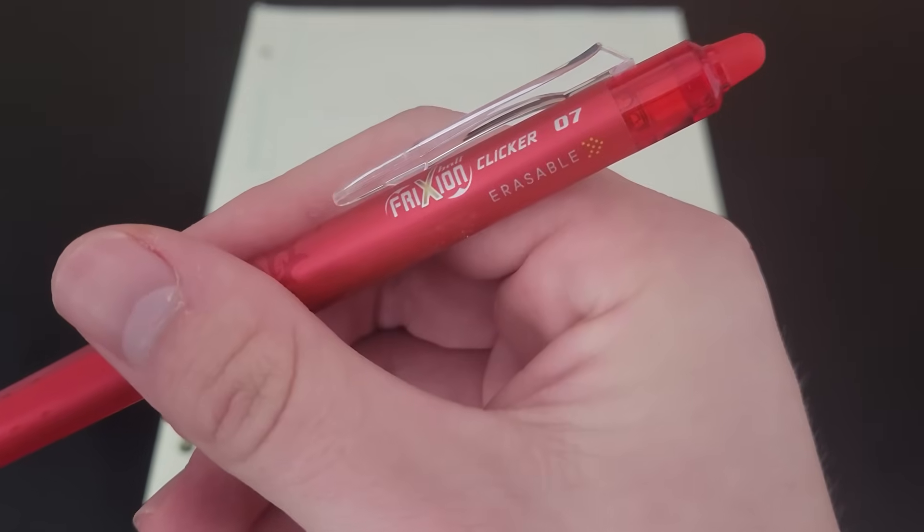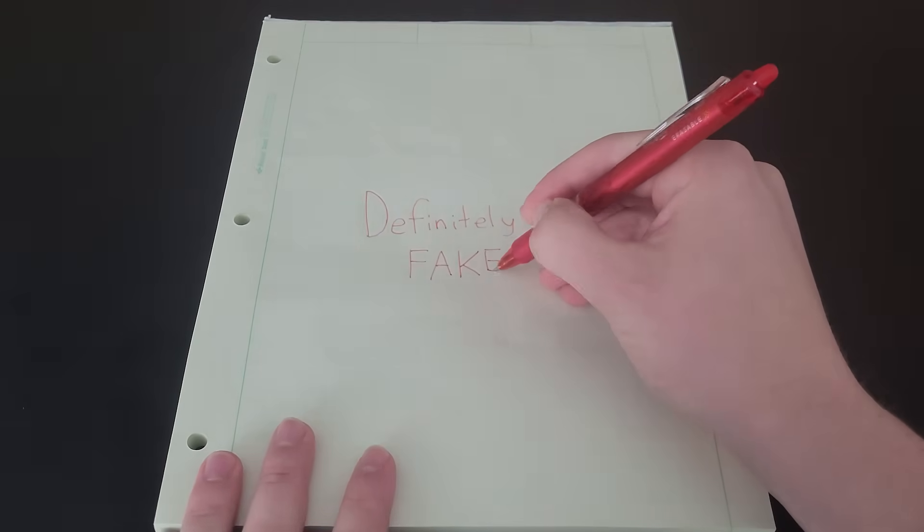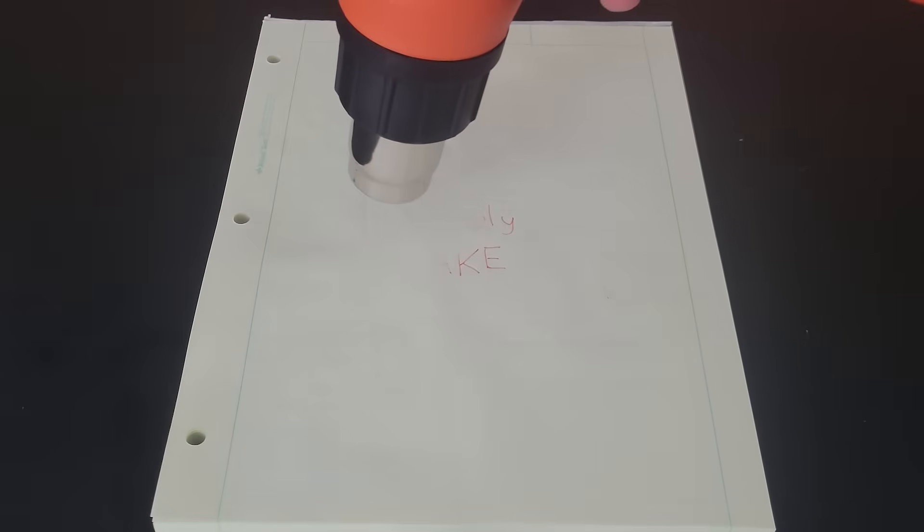Next up take an erasable pen and write on a sheet of paper. The ink of these pens is thermochromic so it changes color with temperature. That means if you use a heat gun you can erase the ink.